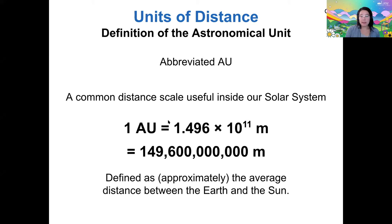If I wanted to write this number — which is written in scientific notation — out in standard form, then I would need to add 11 factors of 10 to this prefix 1.496. If I moved my decimal point over by 3, then that takes care of 3 of those factors of 10, so I'd have 8 left. Therefore, there are 8 zeros.